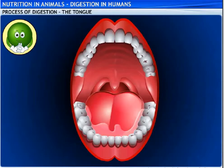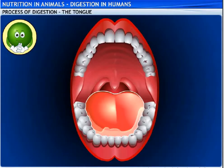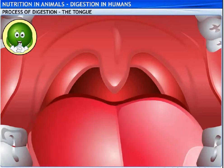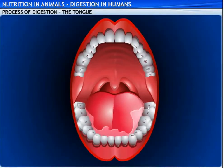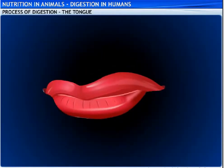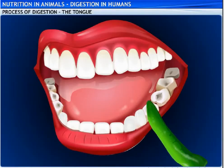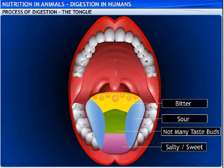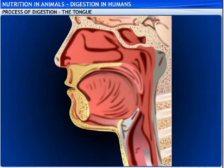This fleshy organ is called the tongue. Being fleshy, it can move in all directions. It is attached to the floor of the buccal cavity. It helps in talking and in moving the food in different directions while chewing. It also mixes the saliva with the food and helps to swallow it. The tongue is also used to clean food particles from the teeth after eating and to taste food. The various taste buds located at different areas on the tongue help detect different tastes.